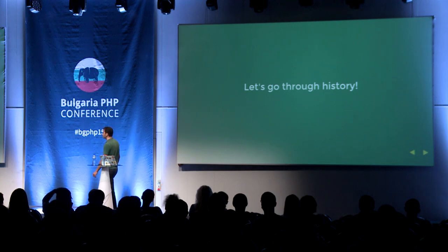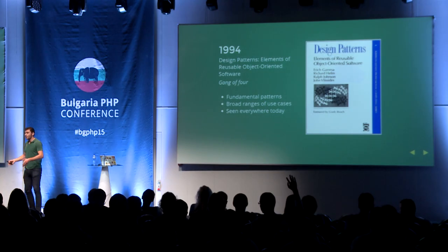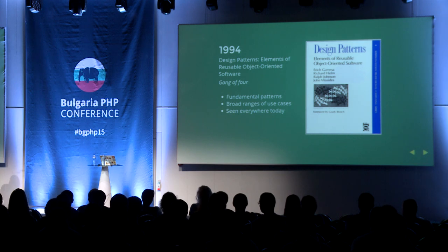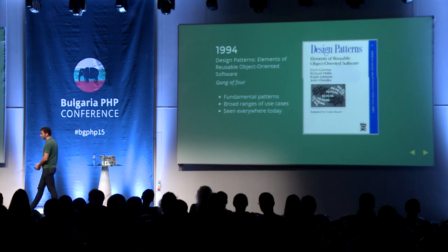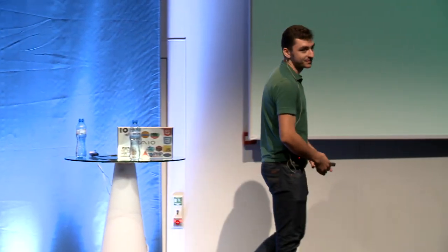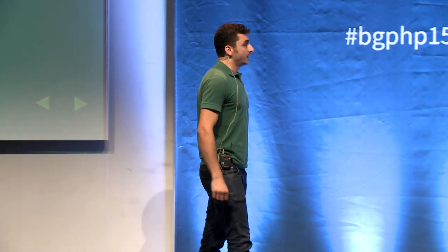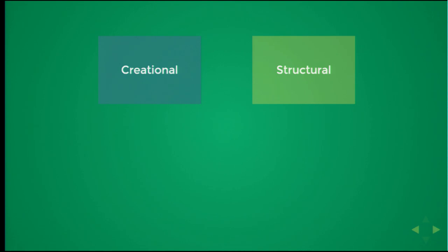When we talk about design patterns, it's very important to go through history. Do you remember that book? When it was published in 1994, I was born in 1991 — I was maybe three years old. The patterns in it were grouped into three categories: creational ones like singletons and factories, structural ones, and behavioral ones like observers.